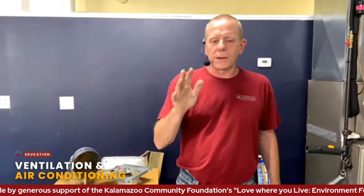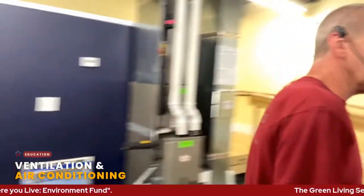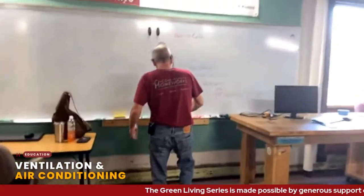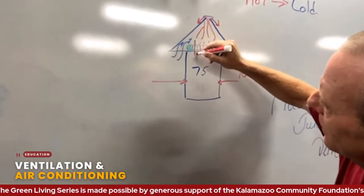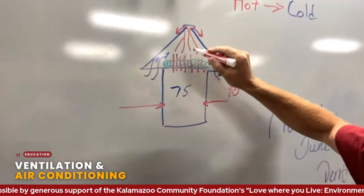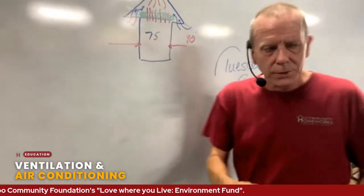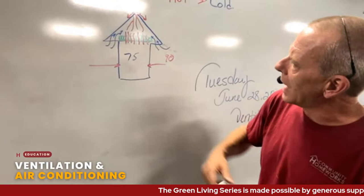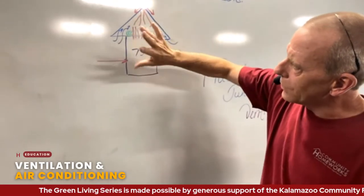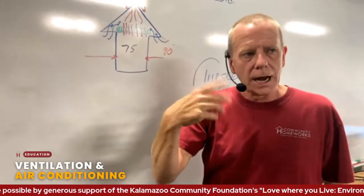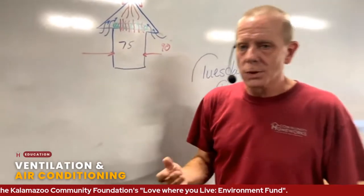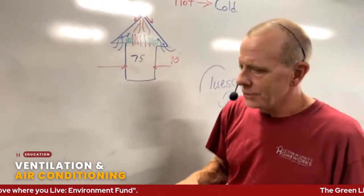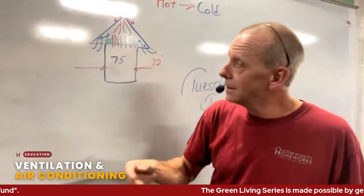One of the other parts of ventilation is your bath fan. Most people have a bath fan, and where it's vented to is very important. A lot of older houses end up dumping that air into the attic space — that's not a good thing. When you run that bath fan, you're trying to get that warm, moist air out. If the bath fan is not vented out properly, it builds up moisture in the attic. In the wintertime, it will condensate and freeze on the underside of your roof deck, which can cause major problems.